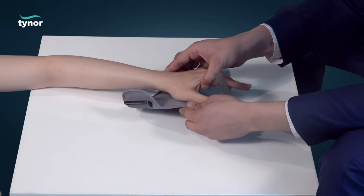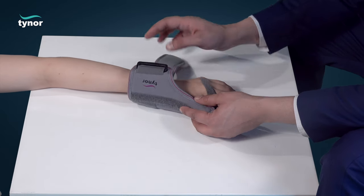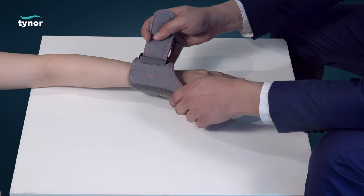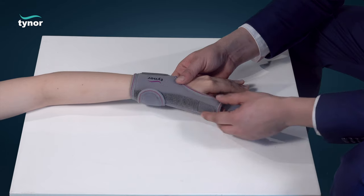Wrap the wrist band of the thumb spica around the wrist. Fasten the hook loop fasteners to a comfortable compression with reverse buckle mechanism.